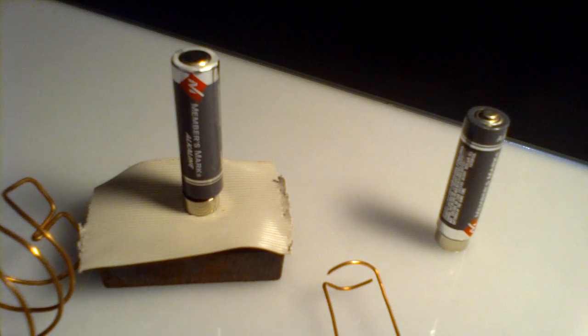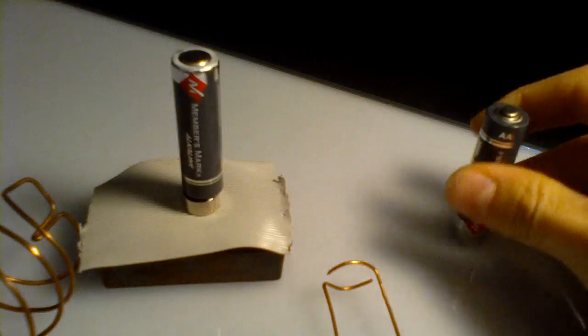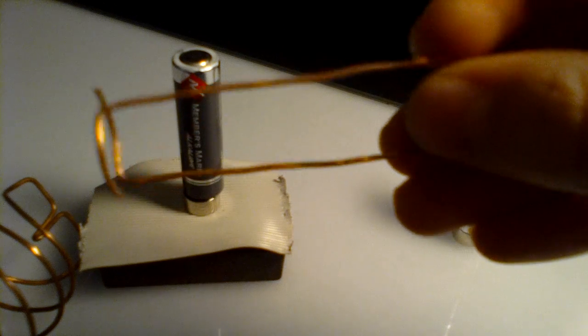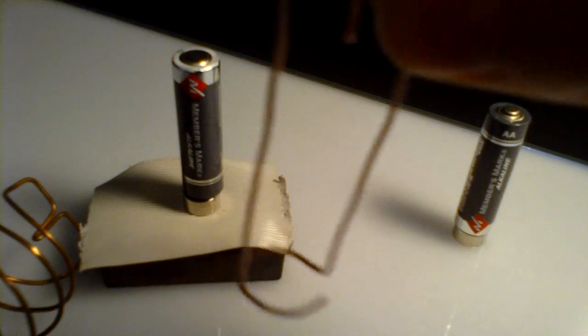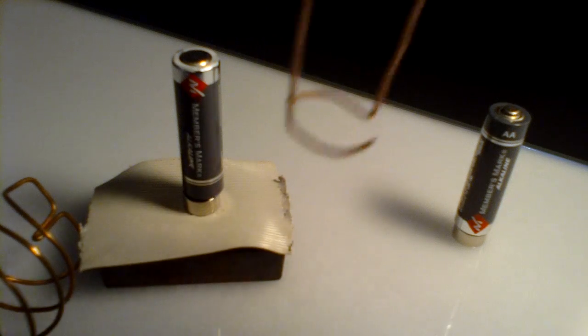In order to make one, you have to put the magnet on the bottom of the battery, and then bend the copper so that it can contact the top of the battery and the magnet, loosely.